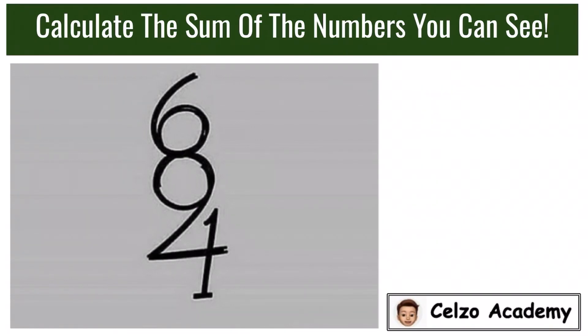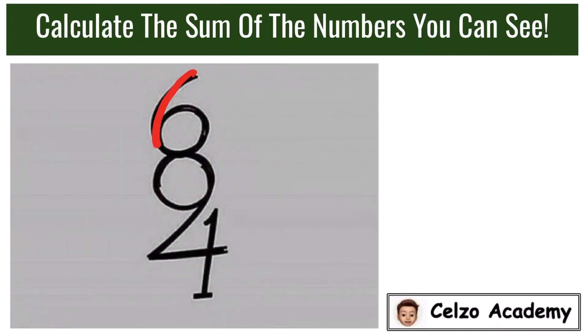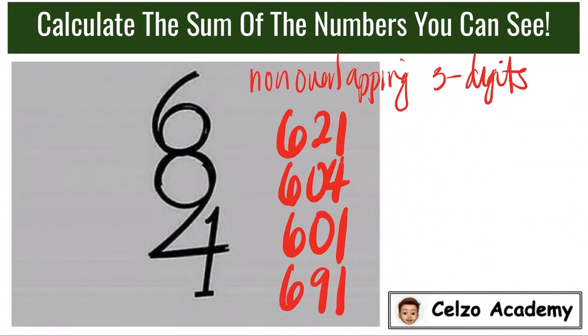Now, let's have non-overlapping three-digit numbers. 621, 604, 601, 691. So these are the three-digit numbers that are non-overlapping. Finding the sum of these three-digit numbers, we have 2517.